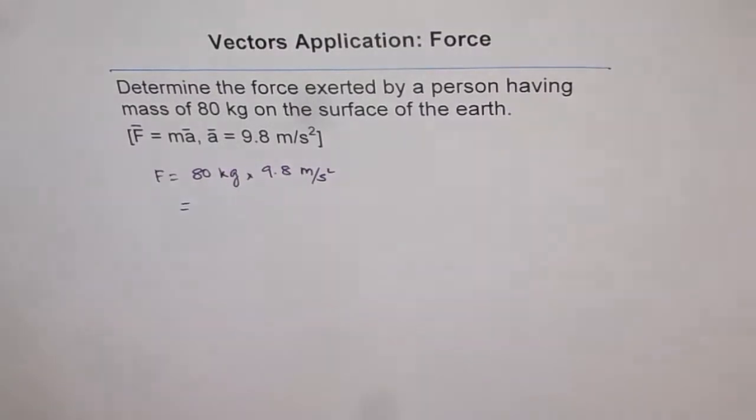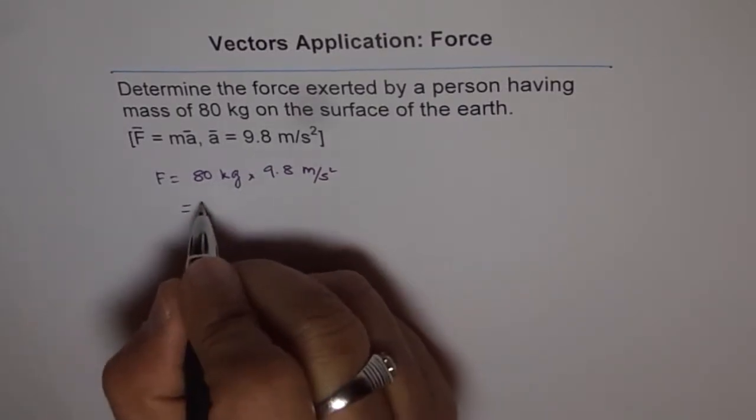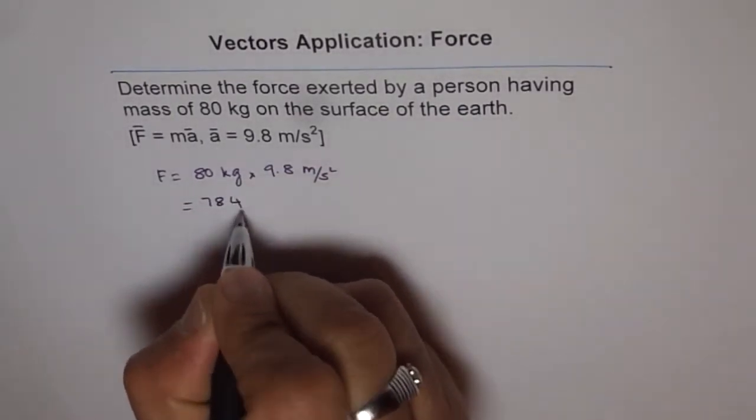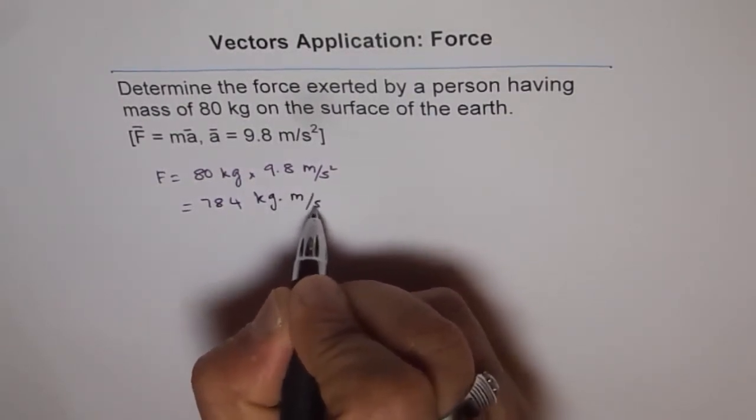And so we can use calculator and figure that out. Most of the time, you can also approximate it, multiply it by 10. So 9.8 times this is 784. We get 784 and the units are kg meters per second square.